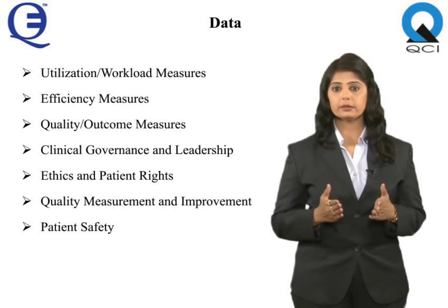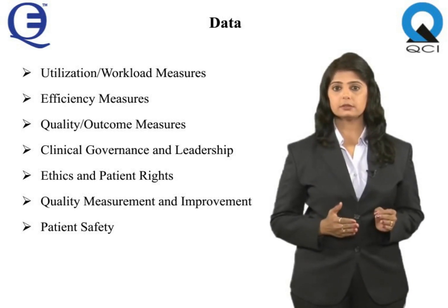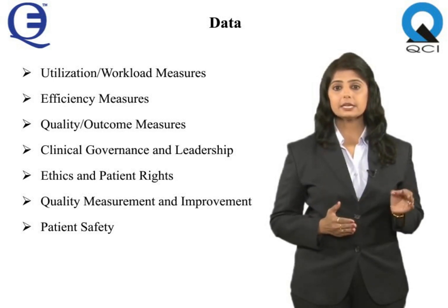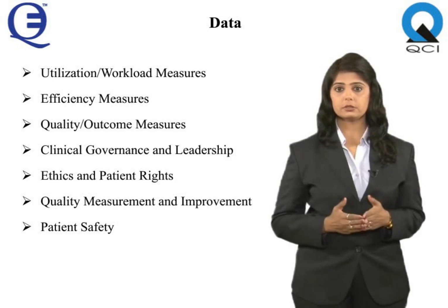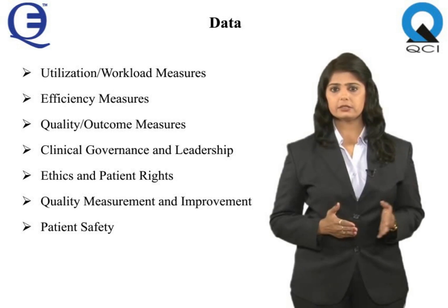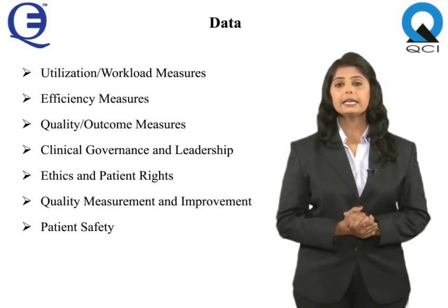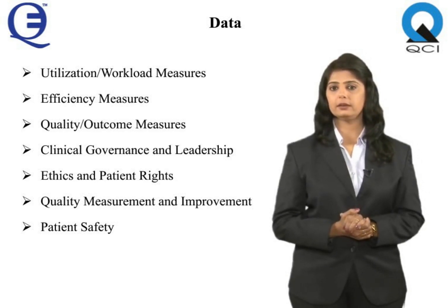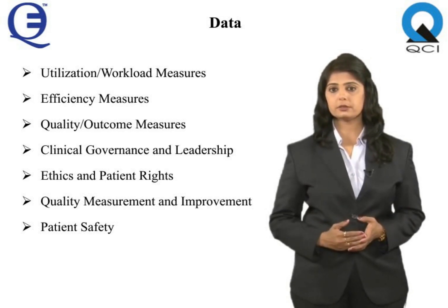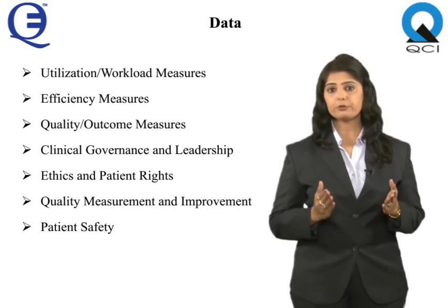Quality or outcome measures include: unplanned readmission rate within a specified number of days, infections, unplanned returns to operating theatre, needle stick injuries, pressure sores, complications rate, deaths, sentinel events, patient complaints, and patient satisfaction. Clinical governance and leadership (CGL) covers governance documents, management responsibility for operations, oversight of contracts, and departmental scope of services and policies and procedures.